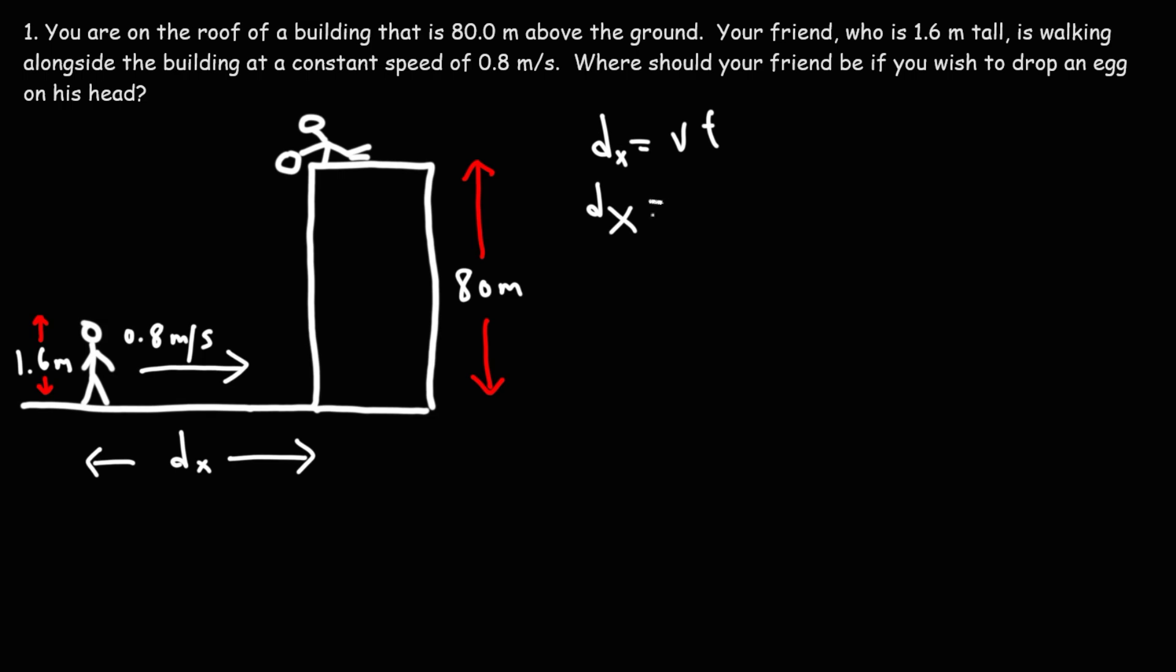Now, we know how fast your friend is moving towards the building. So vx is 0.8 meters per second times t. So once we find the time it takes for the egg to drop from here to here, we just got to plug it into this formula. And then that's going to tell us how far away from the building he needs to be.